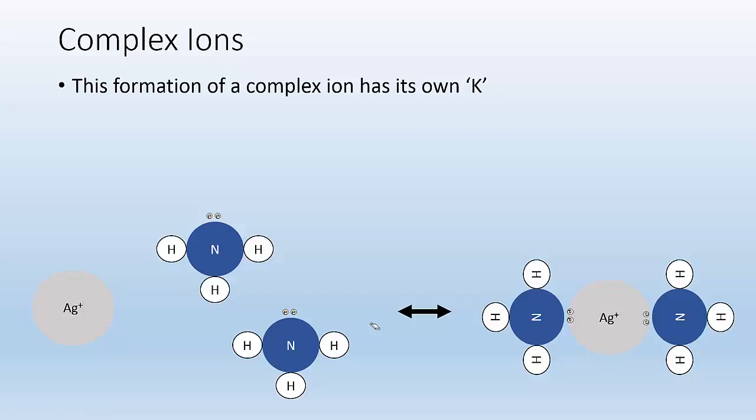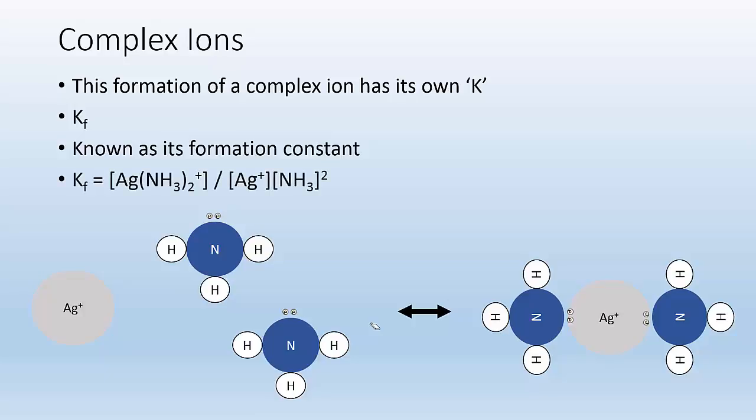Alright. So this formation of a complex ion has its own K. Everything has its own K, huh? KF. And the F is known as the formation constant. So if you hear formation constant, it's talking about KF. So for this example, KF is going to be like any other equilibrium K. Concentration of the products, which is the complex ion, Ag(NH3)2, because there's two NH3s. And it is going to be on top of Ag+ times NH3 squared because you have two NH3s. Count them one, two. So, yeah. More of the same, just different.